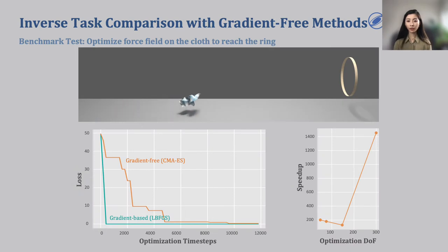To see how DIFFCLOTH compares with gradient-free methods in solving inverse tasks, we designed this benchmark inverse problem that aims to optimize the force field on a cloth to reach a ring at the end of the simulation. We solved the task with gradient-based optimization using DIFFCLOTH and gradient-free methods, and see that our gradient-based method is hundreds-fold more sampling efficient than the gradient-free counterpart. We repeated the task with different numbers of design parameters, and see that the advantage becomes more obvious as more optimization parameters are involved in the task.